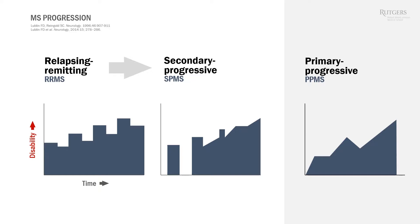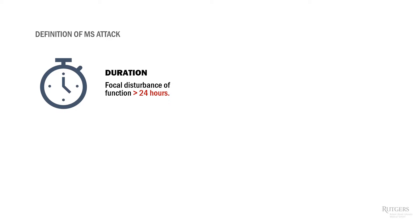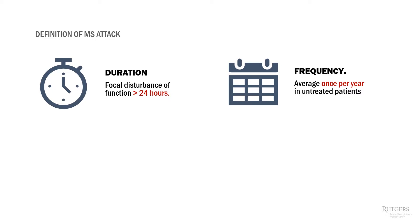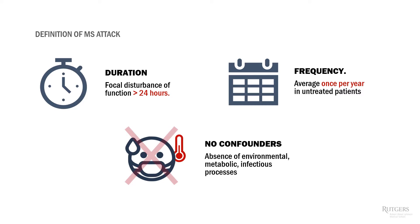The definition of MS relapse is a focal disturbance of function. Because it is inflammation, it is supposed to last days, not minutes — that's why it was decided to count an MS relapse only if symptoms last 24 hours or longer. Relapses occur approximately once every one to two years without treatment. We cannot count a clinical event as a relapse if it happens together with an infectious process, because infection can bring up old symptoms.